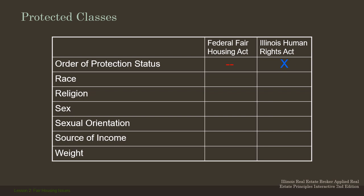Race is under both federal and state acts. Religion is under both. Sex is under both. Sexual orientation — under the Illinois Human Rights Act, and for the federal acts it's really protected under sex. So there isn't a separate sexual orientation category for the federal act, but it is protected under sex. Both sexual orientation — who you're attracted to — as well as your gender identity, including questioning or any of those other categories, are protected.